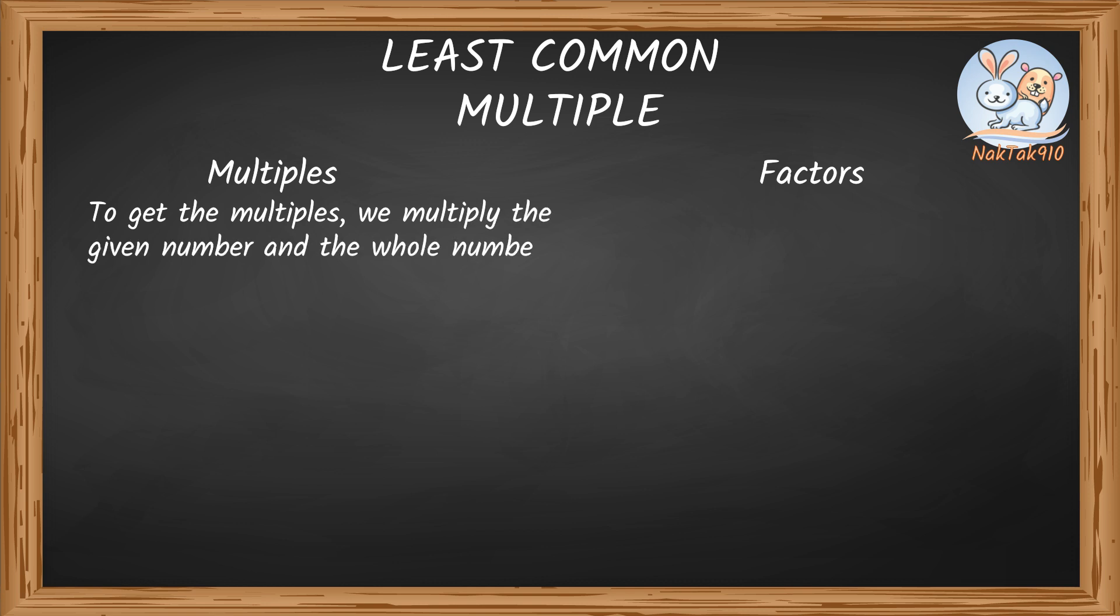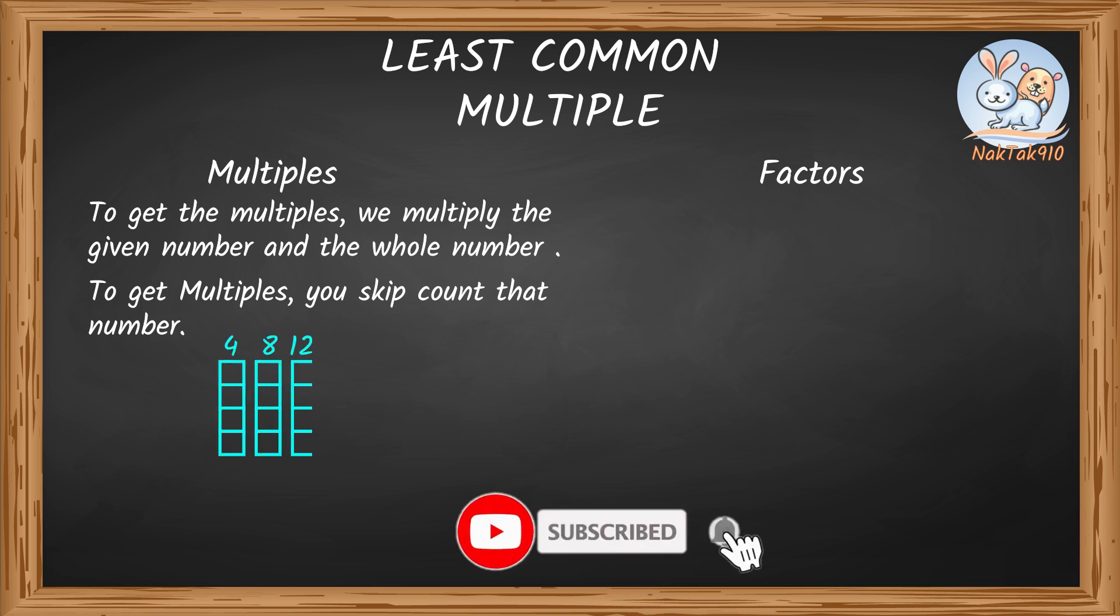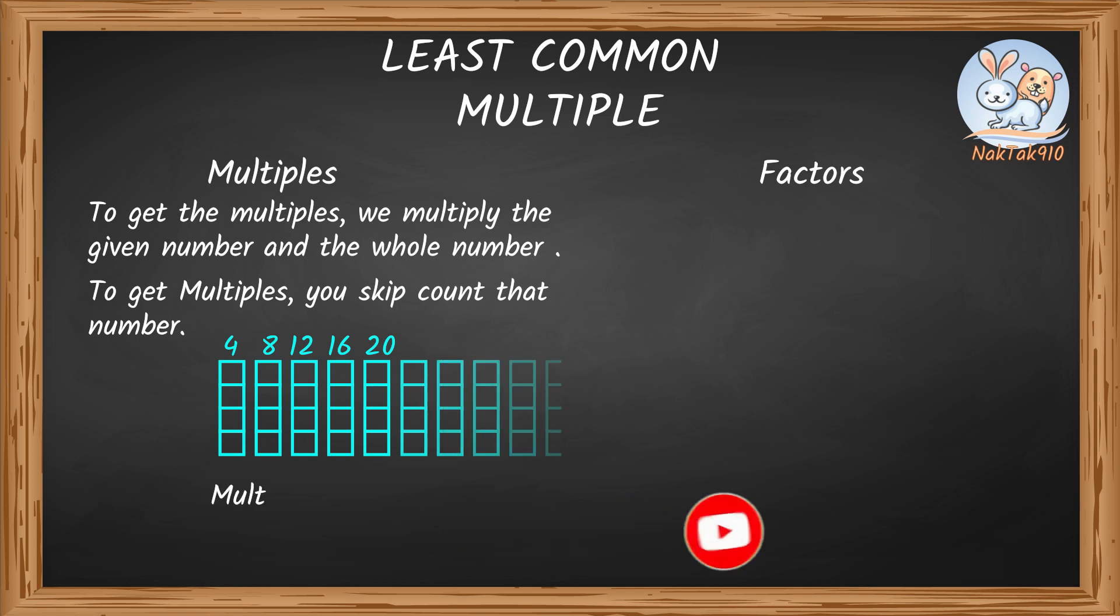To get the multiples, we multiply the given number and the whole number, or you can skip count that number. For example, 4 times 1, 4 times 2, and so on. So it's 4, 8, 12, 16, 20, and the list goes on and on.